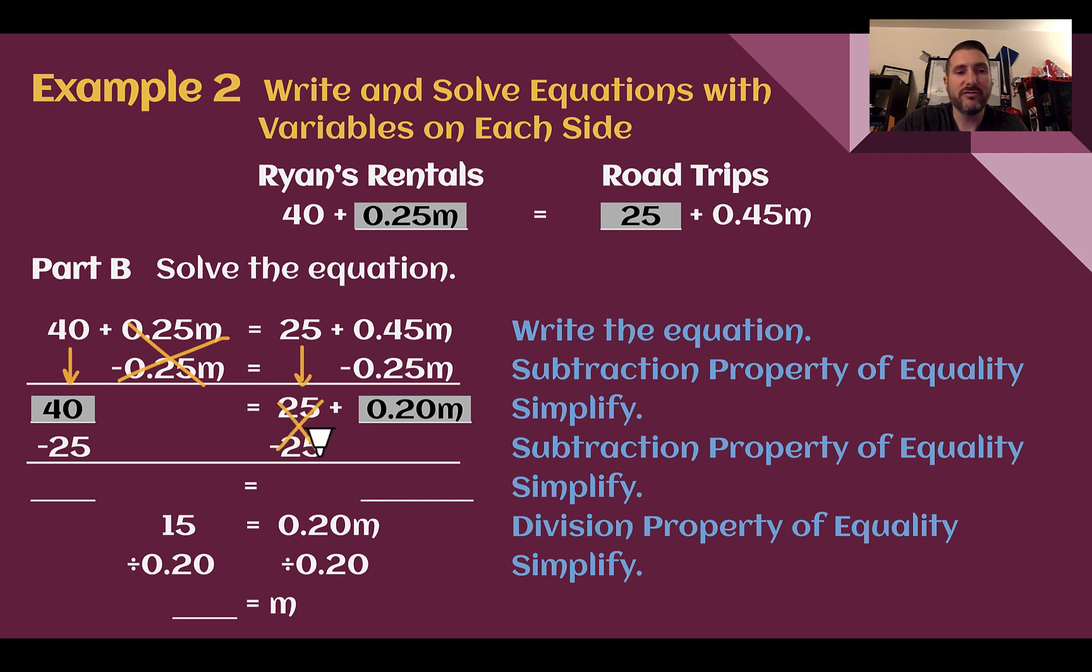Now I can subtract 25 from both sides to eliminate it off the right. 40 minus 25 is 15. Bring down what we didn't use. I have 15 is equal to 0.20M. So I would last divide by 0.2 and I get 75.